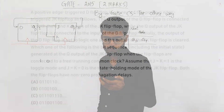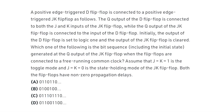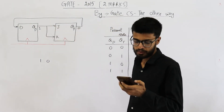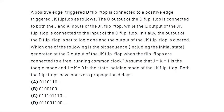Initially, the output of the D flip-flop is set to logic 1 and the output of the JK flip-flop is cleared. That means this output is 1 and this output is 0. Which of the following is the bit sequence, including the initial state, generated at the Q output of the JK flip-flop when the flip-flops are connected to a free running common clock? Assume that J=K=1 is toggle mode and J=K=0 is state holding mode of the JK flip-flop.